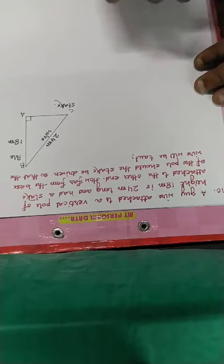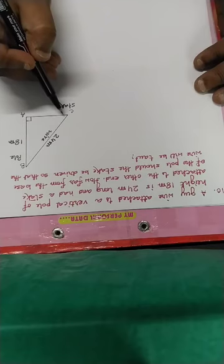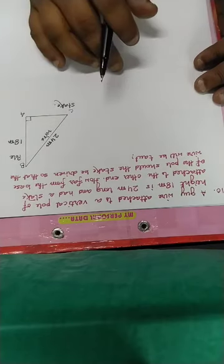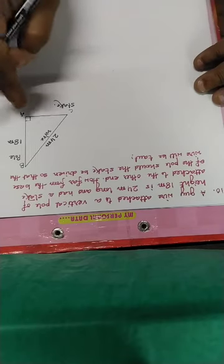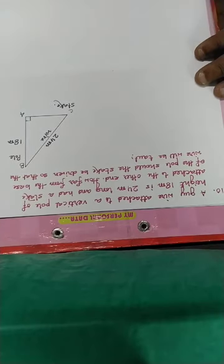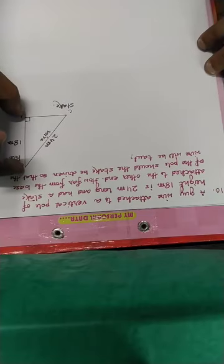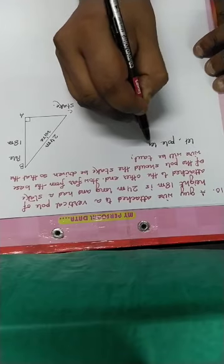The wire is attached to a stake at the other end. How far from the base of the pole should the stake be driven so that the wire will be taut?